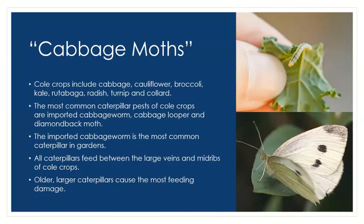Next are cabbage moths. What we typically call cabbage moths in the garden are actually three different species of caterpillar or moth — and depending on the species, tells you what part of the life cycle does the eating. These guys go after cold crops: cabbage, cauliflower, broccoli, radishes, turnips, collard greens, and more. The three most common are the imported cabbage worm, the cabbage looper, and the diamondback moth. All three caterpillars feed between the large veins and mid-ribs of cold crops, and older caterpillars cause the most feeding damage.